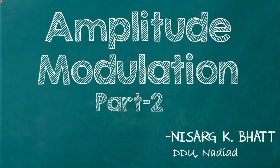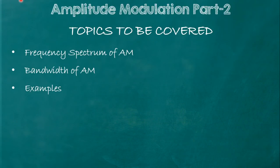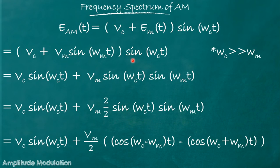In the second part of amplitude modulation, we will learn the frequency spectrum of AM, bandwidth of AM, and some examples. From part one, we know that the amplitude modulated signal is represented by the equation e_am(t) = (Vc + em(t)) * sin(ωc*t), where em(t) is the information signal. Let us assume that our information signal is a low frequency sinusoidal wave.